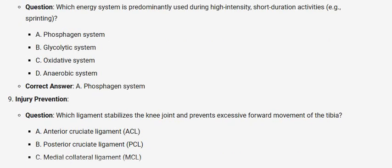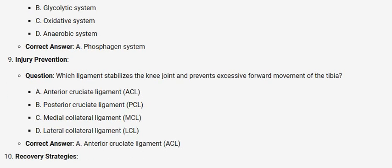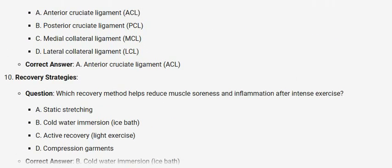Injury prevention. Question: Which ligament stabilizes the knee joint and prevents excessive forward movement of the tibia? A. Anterior cruciate ligament, ACL. B. Posterior cruciate ligament, PCL. C. Medial collateral ligament, MCL. D. Lateral collateral ligament, LCL. Correct answer: A. Anterior cruciate ligament, ACL.